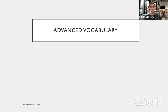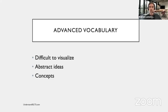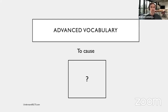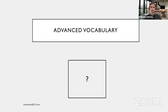Advanced vocabulary, on the other hand, is difficult to visualize. Normally these are abstract ideas or concepts. For example, the word 'to cause' — most of you probably know that word, but there isn't really one single image that can easily be associated with it. There may be many things which might represent it, but none of them are the only image for that word. Another example would be the word 'constantly' — again, it's not easy to visualize what that word means.